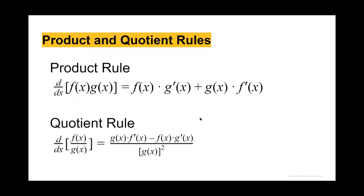For the product and quotient rules: the product rule says if y equals f of x times g of x, then the derivative equals f of x times g prime of x plus g of x times f prime of x. For the quotient rule, if you have f of x divided by g of x, the derivative equals g of x times f prime of x minus f of x times g prime of x, all divided by g of x squared. These are two rules you need to have memorized for your test.